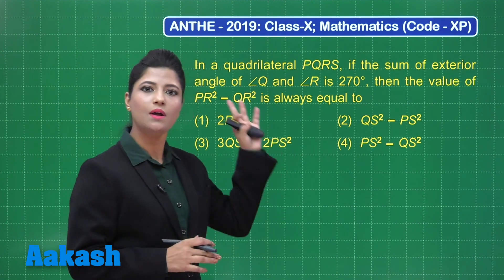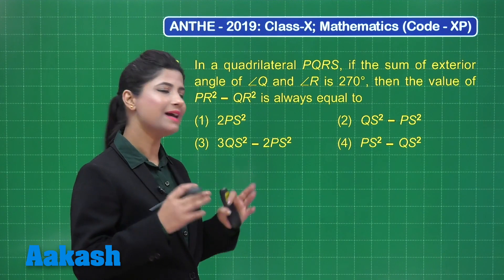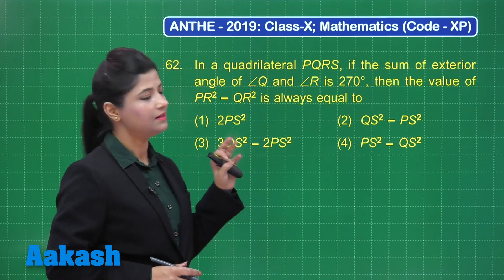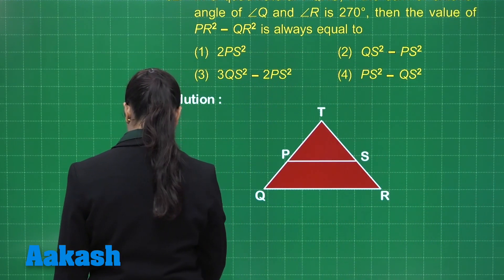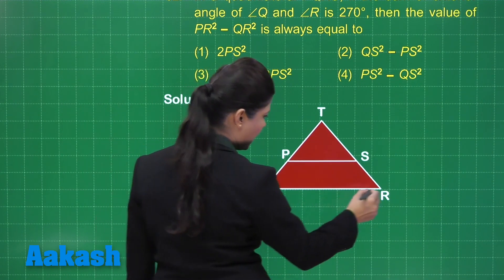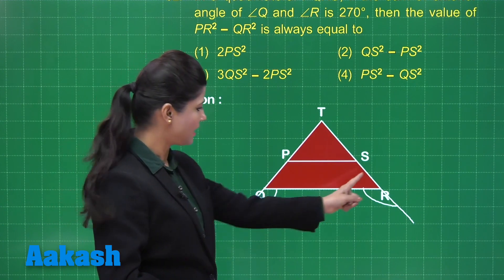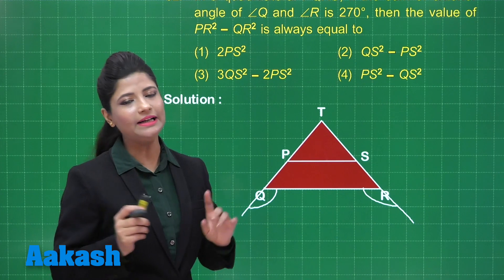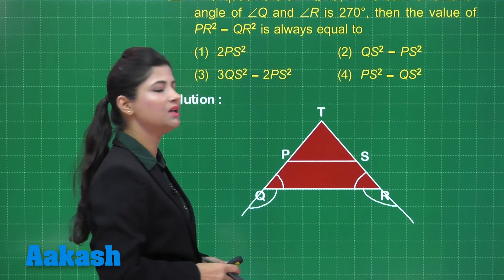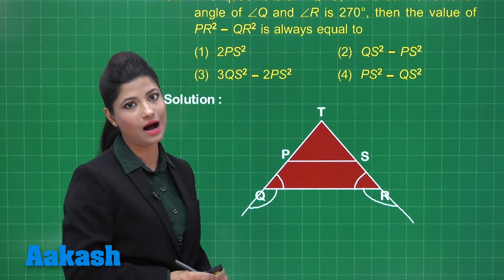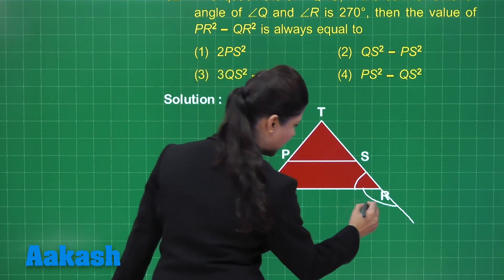We are talking about quadrilateral PQRS where the sum of exterior angle Q and exterior angle R equals 270 degrees. If we extend side QP and RS, they will meet at some point T. The sum of the two linear pair angles at Q is 180 degrees, and the sum of the two linear pair angles at R is also 180 degrees, giving a total of 360 degrees.